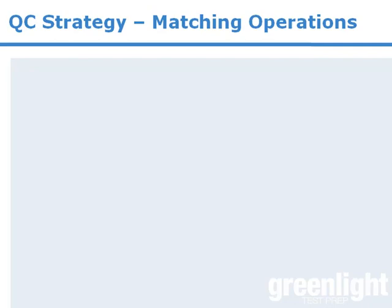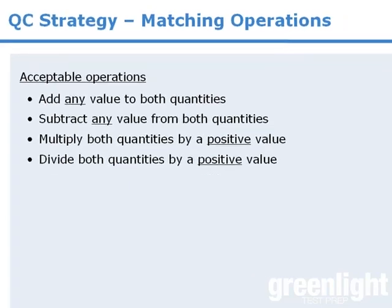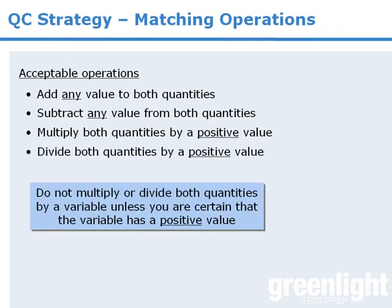Alright, let's summarize. In this lesson, we learned that we can simplify quantitative comparison questions by performing the same operations on both quantities. We also learned that we must not multiply or divide the quantities by a variable unless we're absolutely certain that the variable has a positive value only. We'll see you next time.